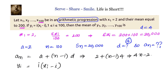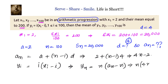Now, what is yi? yi equals i into xi minus i. In arithmetic progression language, the nth term of the y series is n into an minus n. Substituting an equals 4n minus 2, we get n into 3n minus 2, which simplifies to 3n squared minus 2n.